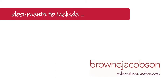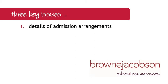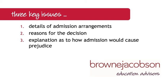What documents must be included in the appeals pack? The old code listed a number of documents that must be included but the new code is less prescriptive. However, it does list three key issues that must be included in admission authority evidence: firstly, details of how the admission arrangements apply to the appellant's application; secondly, reasons for the decision to refuse admission; and thirdly, an explanation of how admission of an additional child would cause prejudice to the provision of efficient education or efficient use of resources. That information will form part of your prejudice statement, which is covered in a separate session on our website.